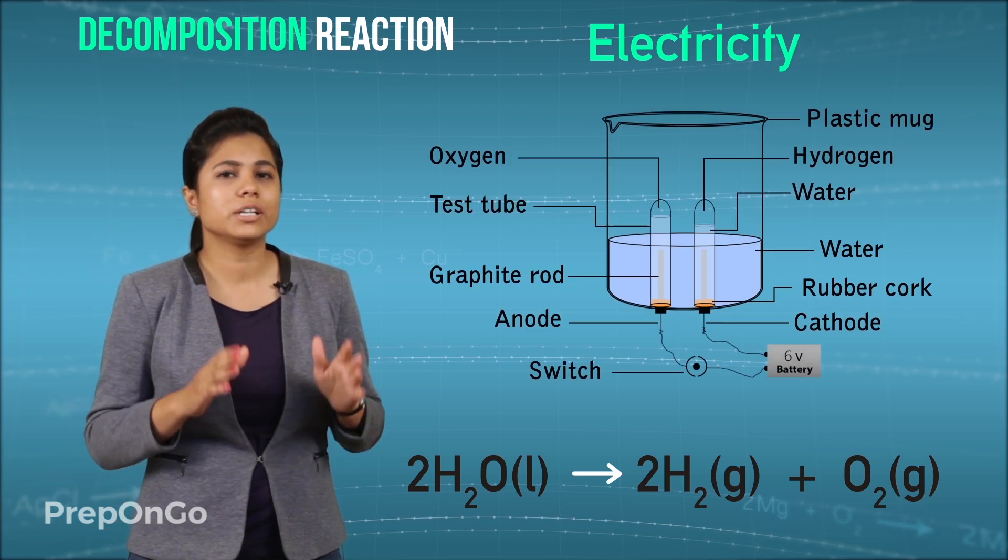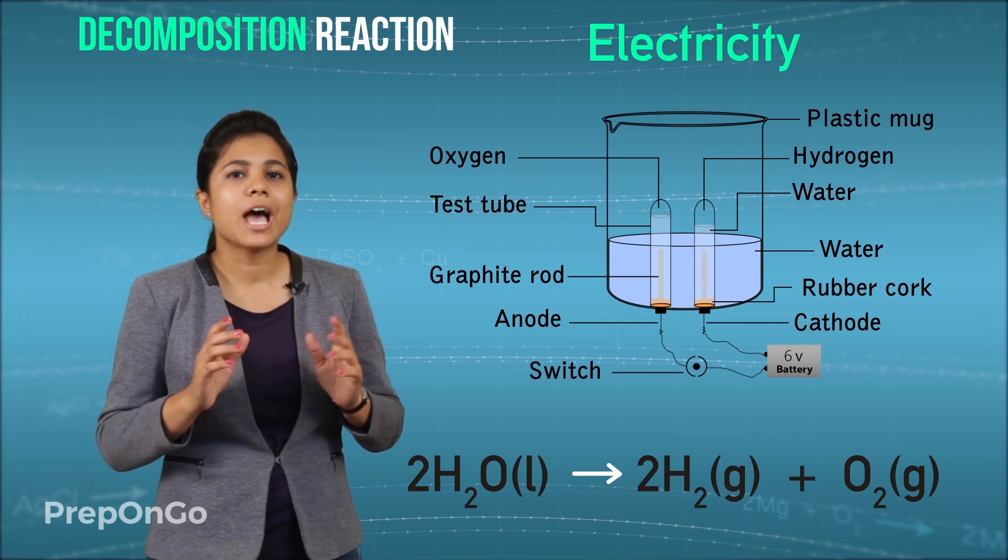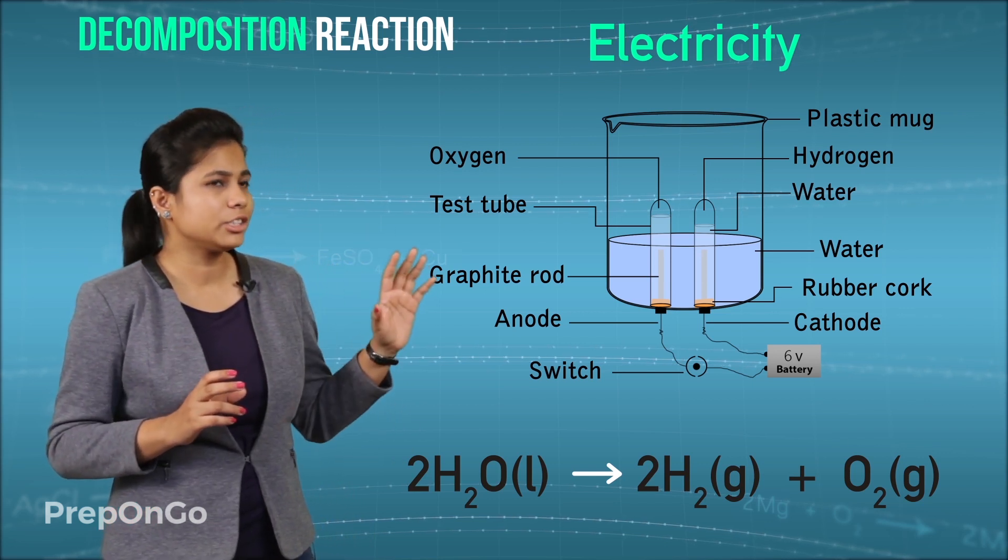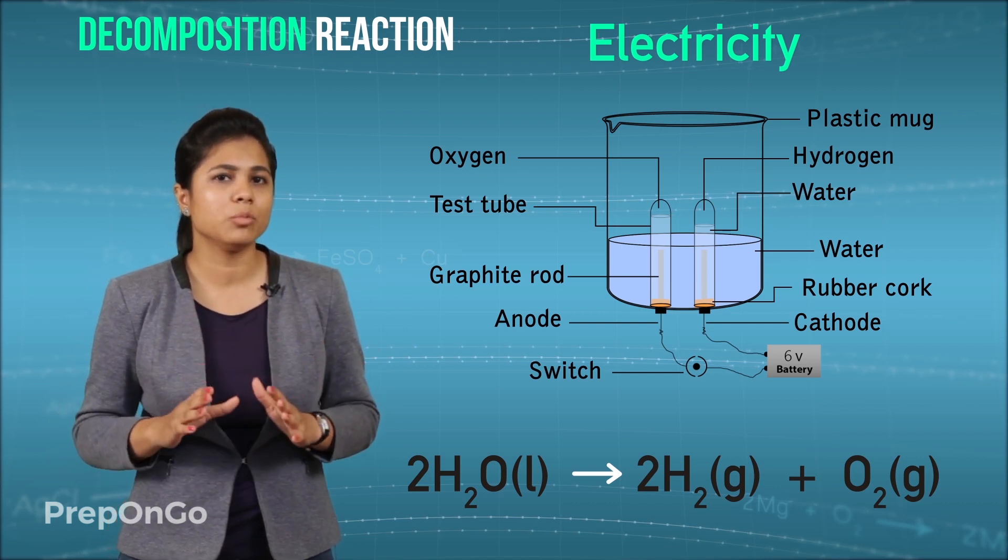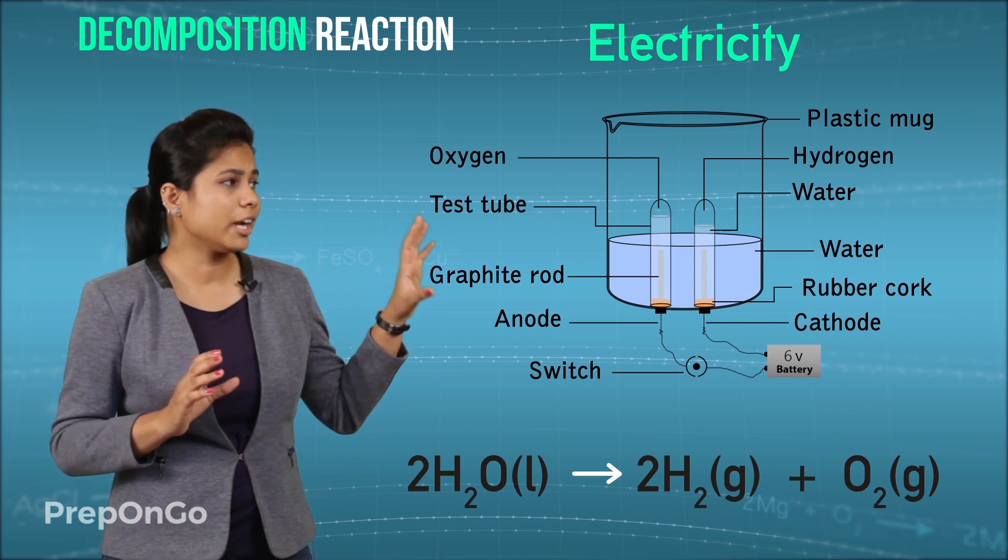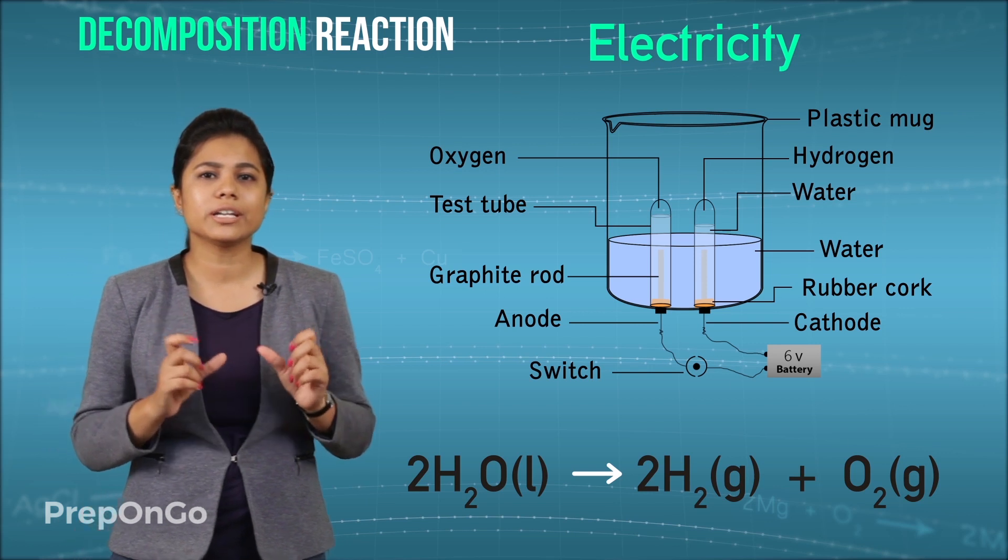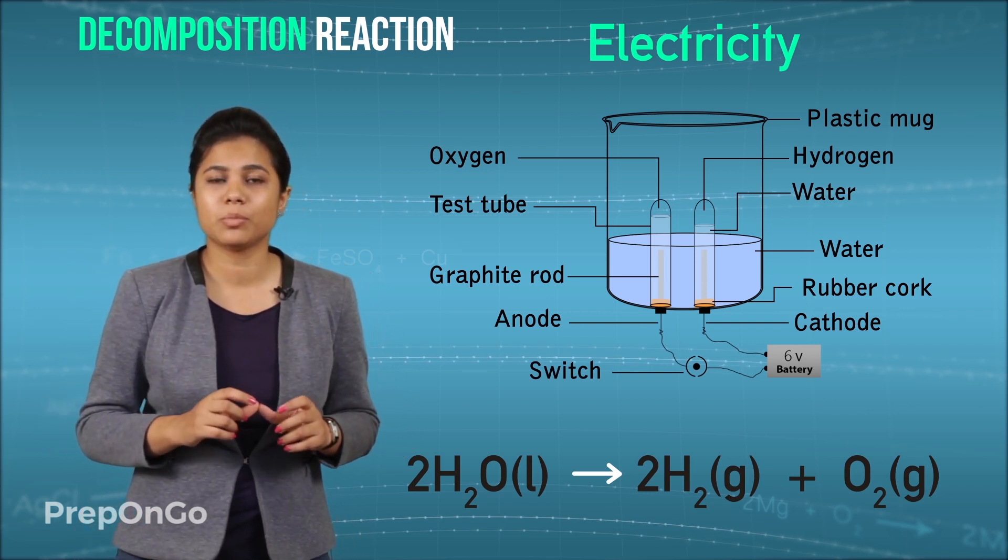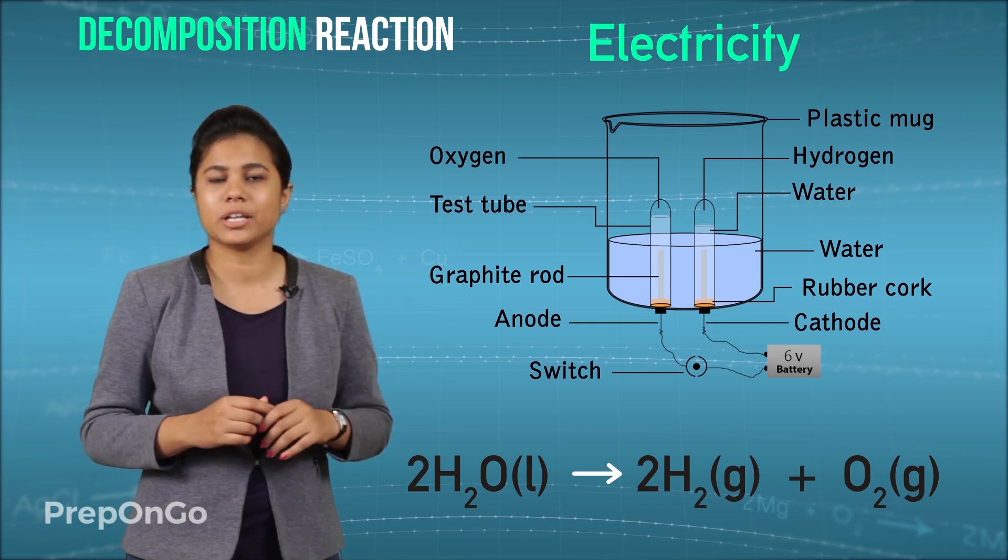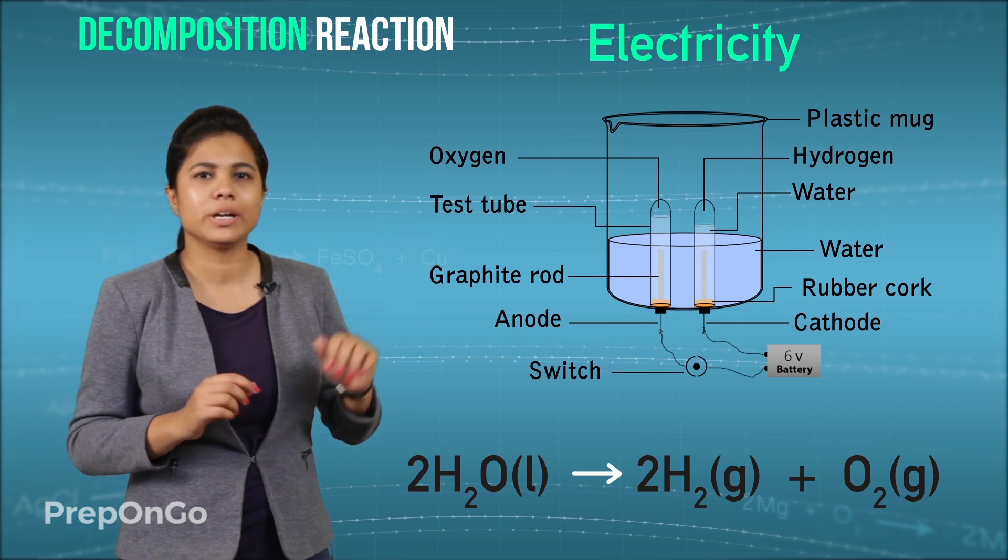Now we also know that the water molecule is made up of two hydrogen atoms and one oxygen atom. You have observed that in one test tube the number of bubbles are more than the other. This says that the hydrogen atoms are released in twice the rate. So you can confirm that during the decomposition reaction with every one oxygen atom two hydrogen atoms are released. And hence there are more hydrogen bubbles in one test tube.